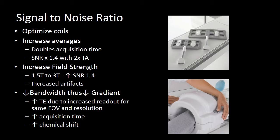So how do we improve signal-to-noise ratio? The best way is by optimizing which coil you're using and coil positioning, because the strength of your radio frequency signal drops off rapidly as you move away from your source. You can also increase your number of averages, which means acquiring each image twice to get twice the amount of data. Getting twice the data takes twice the time, and you only get an improvement by the square root of two — a signal-to-noise ratio increase of 1.4 takes twice the time.